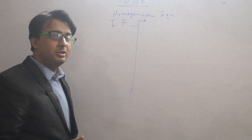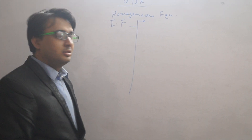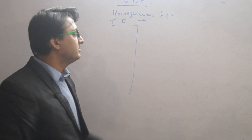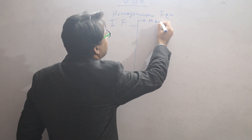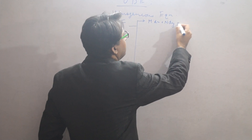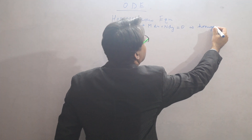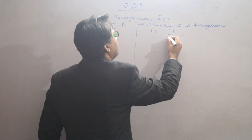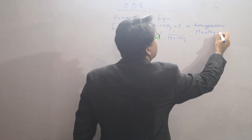If the equation is exact, we already know the consequences. But if it is not exact, in this case the integrating factor is multiplied and it makes it a perfect differential, so that makes it exact. If M dx + N dy = 0 is homogeneous, then the integrating factor is 1/(mx + ny), provided mx + ny is not equal to 0.